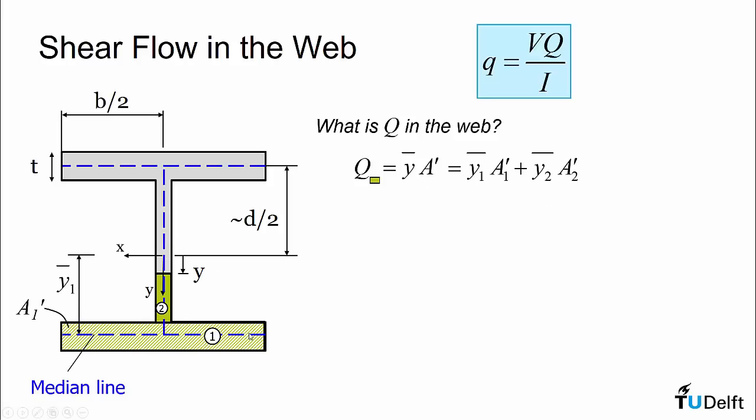Now looking at the first area 1, this value will actually be a constant. If I'm sectioning through the web, this area will always be the same. And it'll be equal to the distance to the centroid is just d over 2, as it was in the previous analysis for the flange. And now the area is constant. It's not changing because we're not sectioning at different various points along x. It is just the area of the flange, which is b times t.